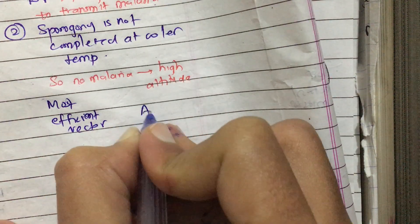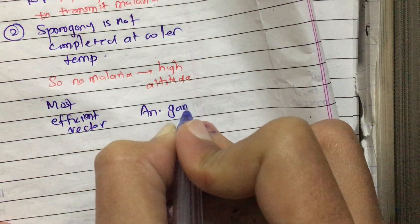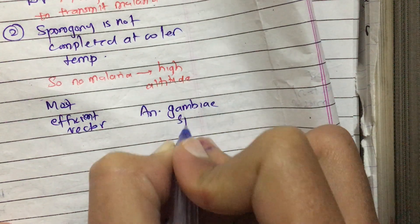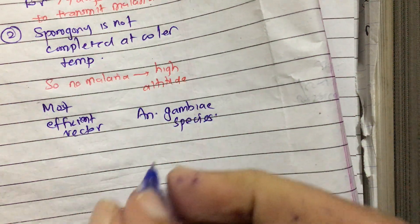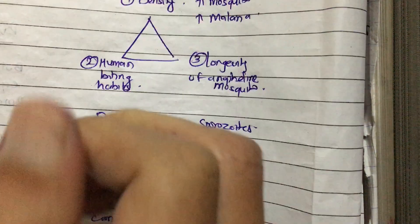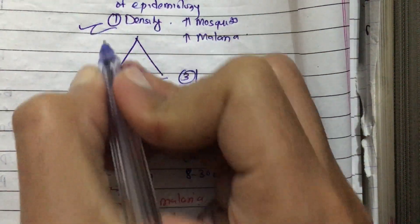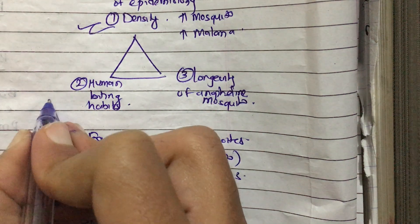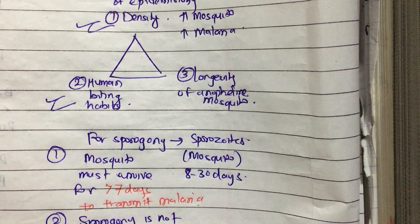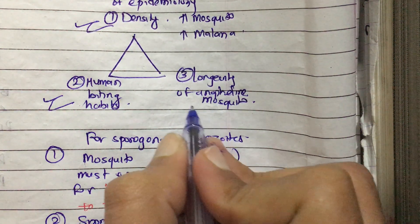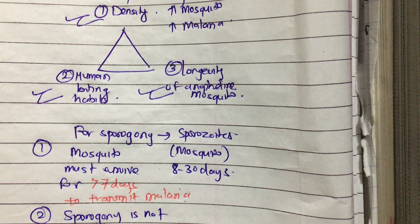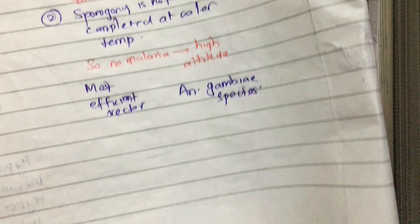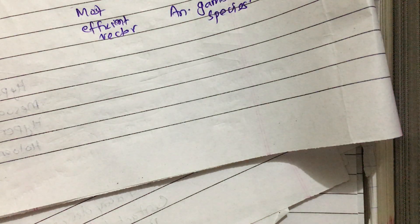The most efficient vector is Anopheles gambiae species, because it has high density, it preferentially bites humans, and it has a longer lifespan than other species.